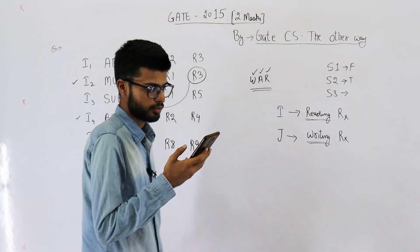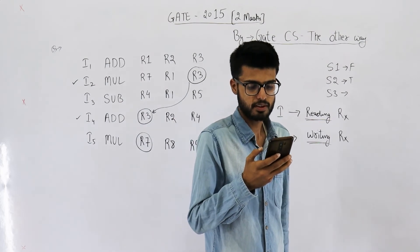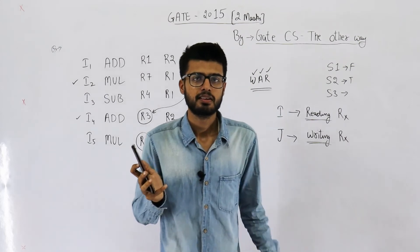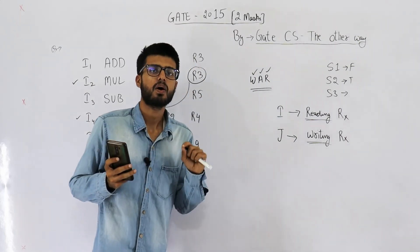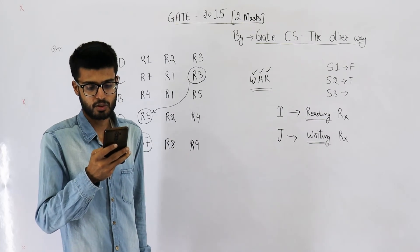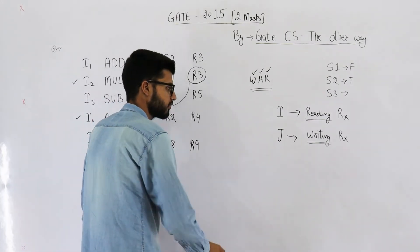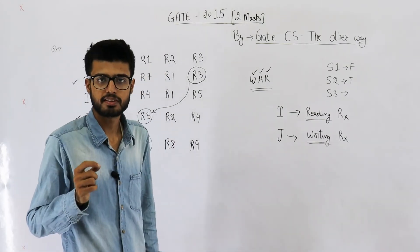S3 says within an instruction pipeline, an anti-dependency always creates one or more stalls. It's false. There's this word always. Anti-dependency will not always create a stall because many times or most of the times we can just use the technique of register renaming.